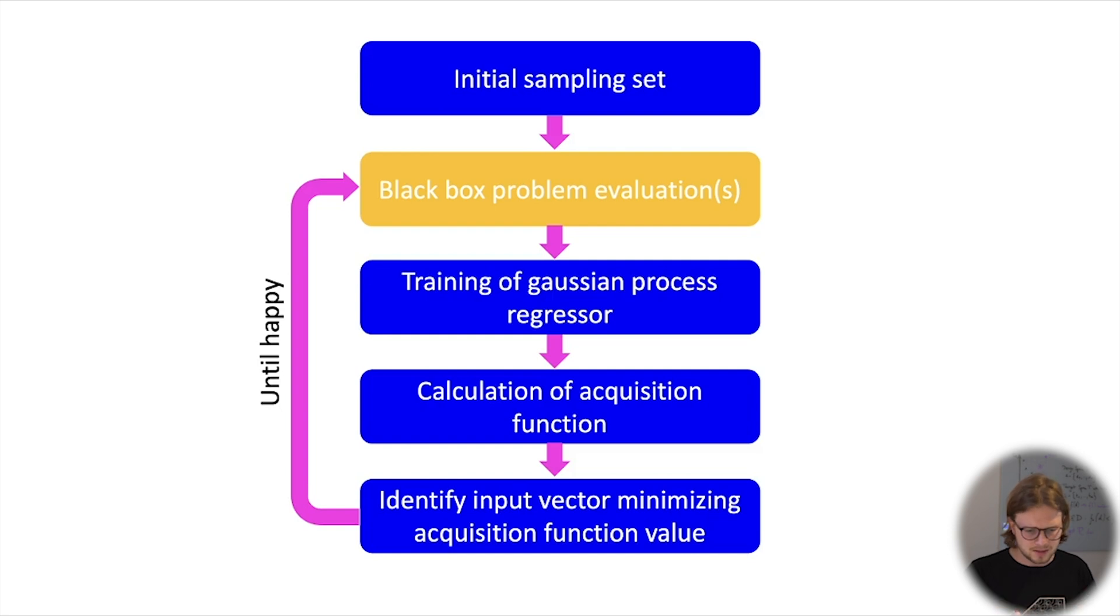Based on these results you can start a training of a Gaussian process regressor. What this means in detail we get to later. Based on these results you do a calculation of an acquisition function, and you use this acquisition function in the last step to identify the next input to evaluate. So you try to minimize that function and see which evaluation am I going to do next in the black box problem, and then you start the process over and over again until a certain criterion is met.